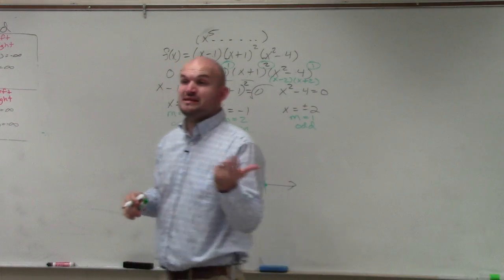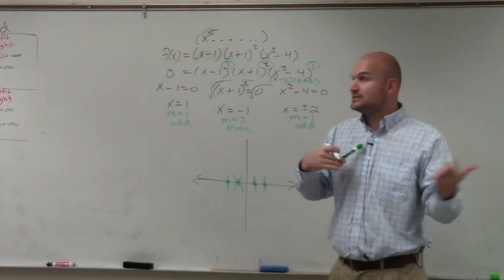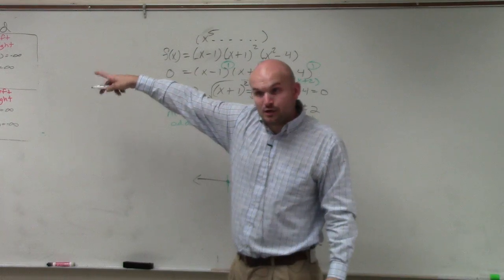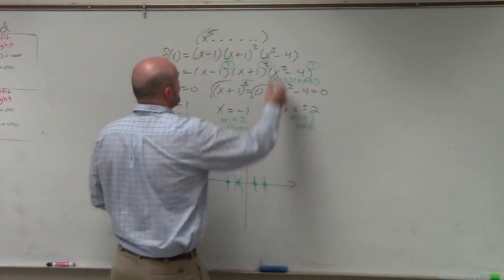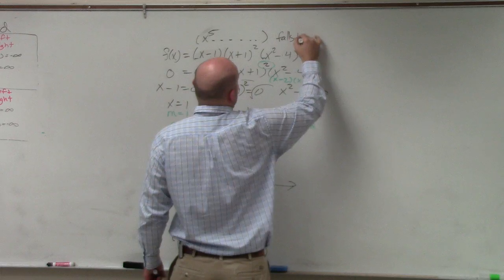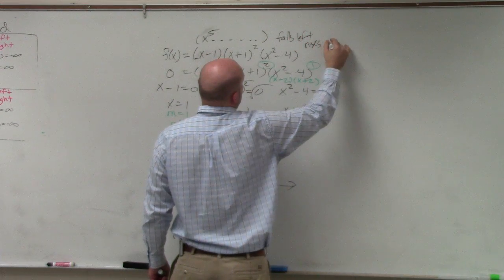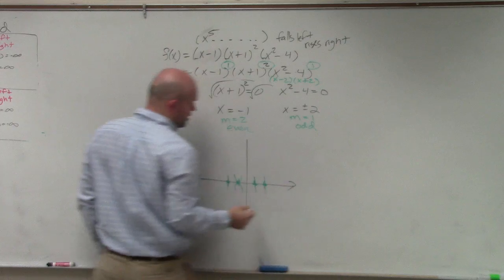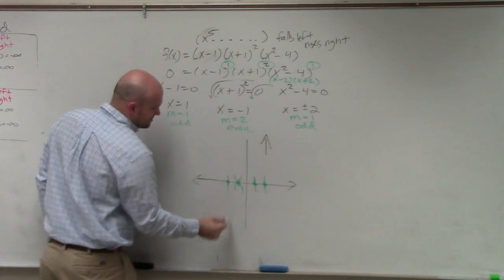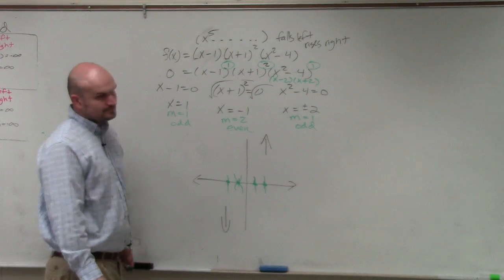Now if I have x to the fifth, that means I have an odd power with a leading coefficient that's positive. Using my leading coefficient test, I know that this graph falls left, rises right. So my end behavior looks something like this, right?